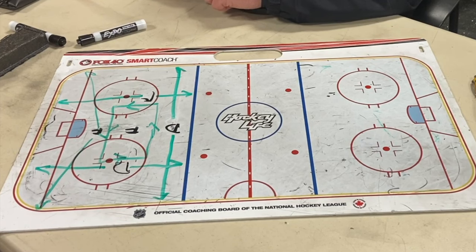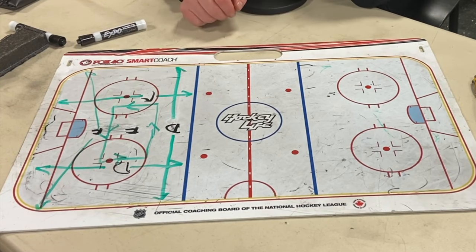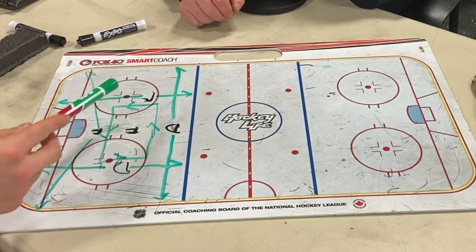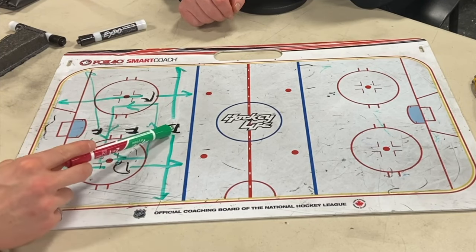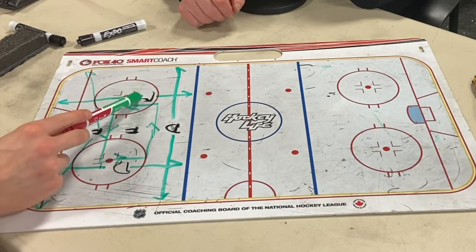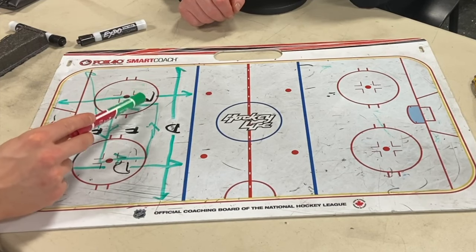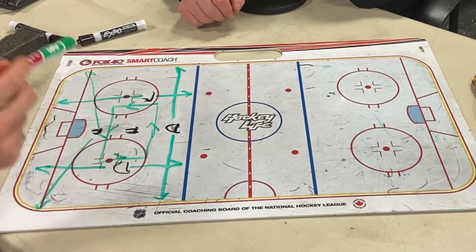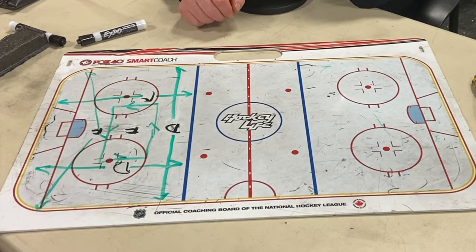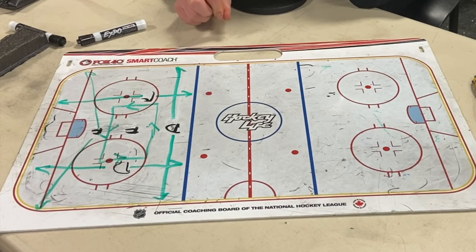Depending on your position on the power play, you can cover all of this ice. The biggest problem I see is guys just standing there — for example, on the overload, if this guy passes up to the defenseman and the D goes to take a shot, this guy won't come down because he thinks he needs to stay there. But no — you can move, you can come into the net now. It's important that guys know you don't have to stay glued to your spot just because it's a power play.